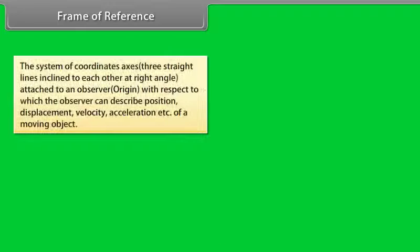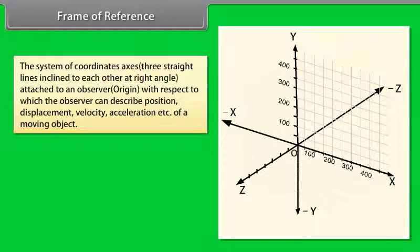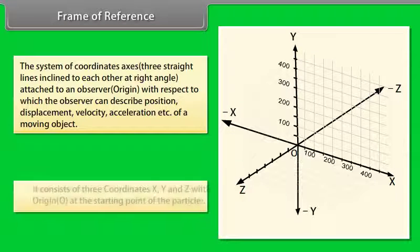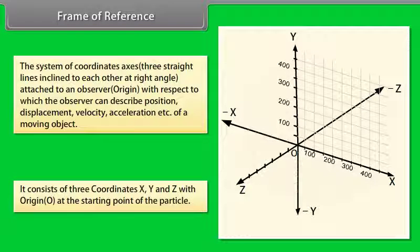Frame of reference: The system of coordinate axes — three straight lines inclined to each other at right angles, attached to an observer at the origin — with respect to which the observer can describe position, displacement, velocity, and acceleration of a moving object. It consists of three coordinates x, y, and z, with origin O at the starting point of the particle.